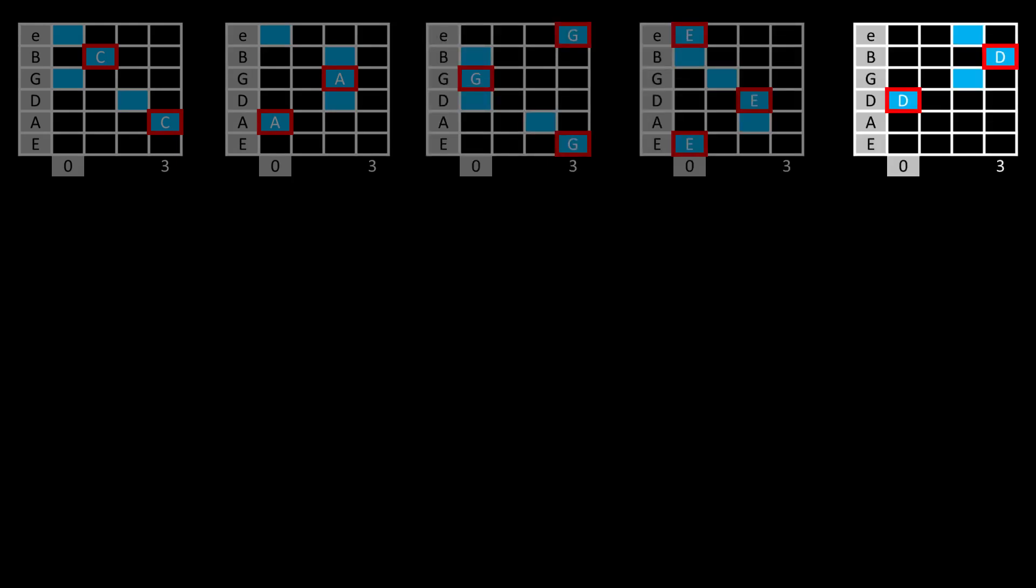I've highlighted the root notes in red. So whenever you see root notes in this position, it's a C shape. Similarly, for A, G, E, D.